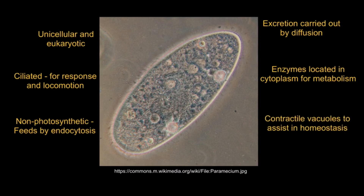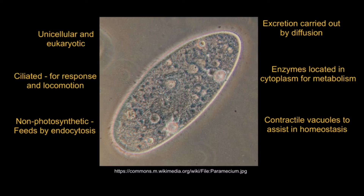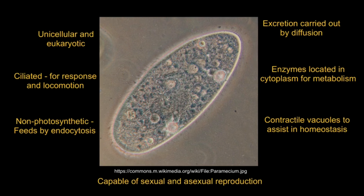Contractile vacuoles are used for homeostasis, which is the maintenance of a constant internal environment within narrow limits. And finally, paramecium are able to reproduce both sexually and asexually.